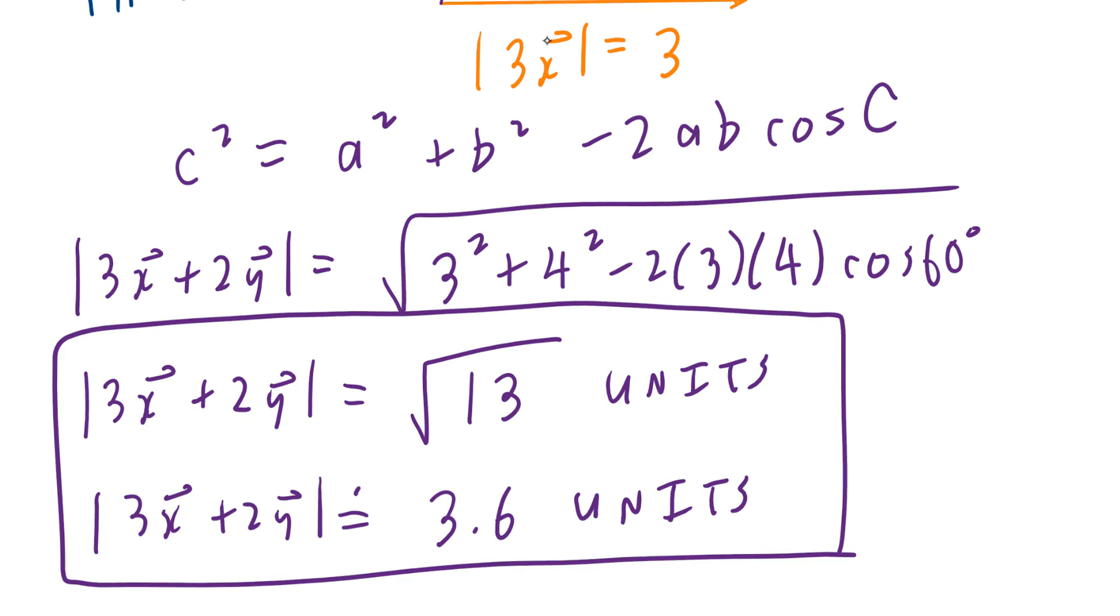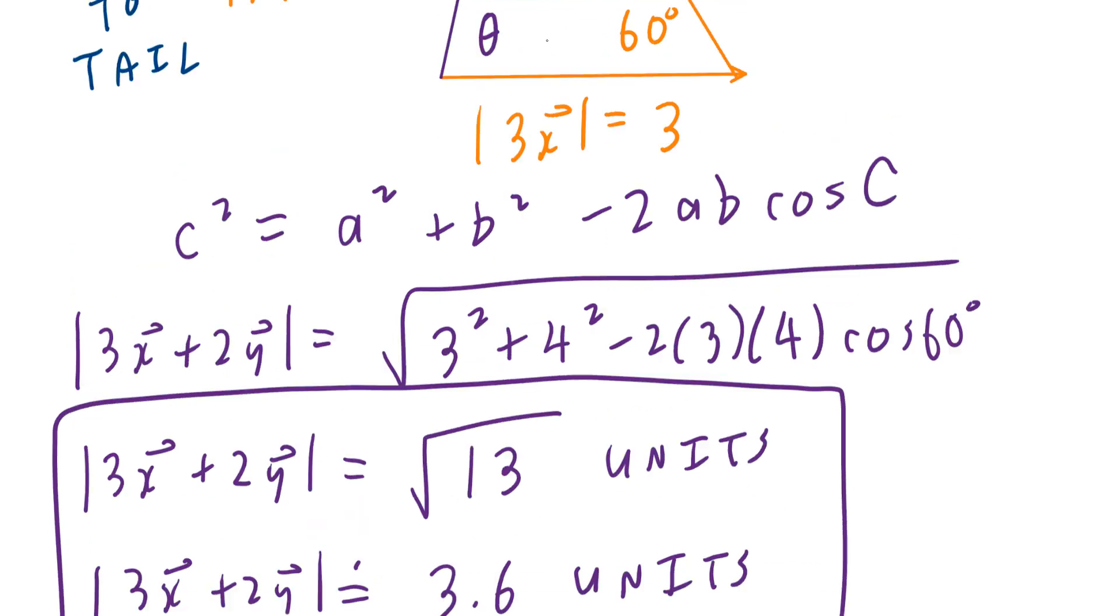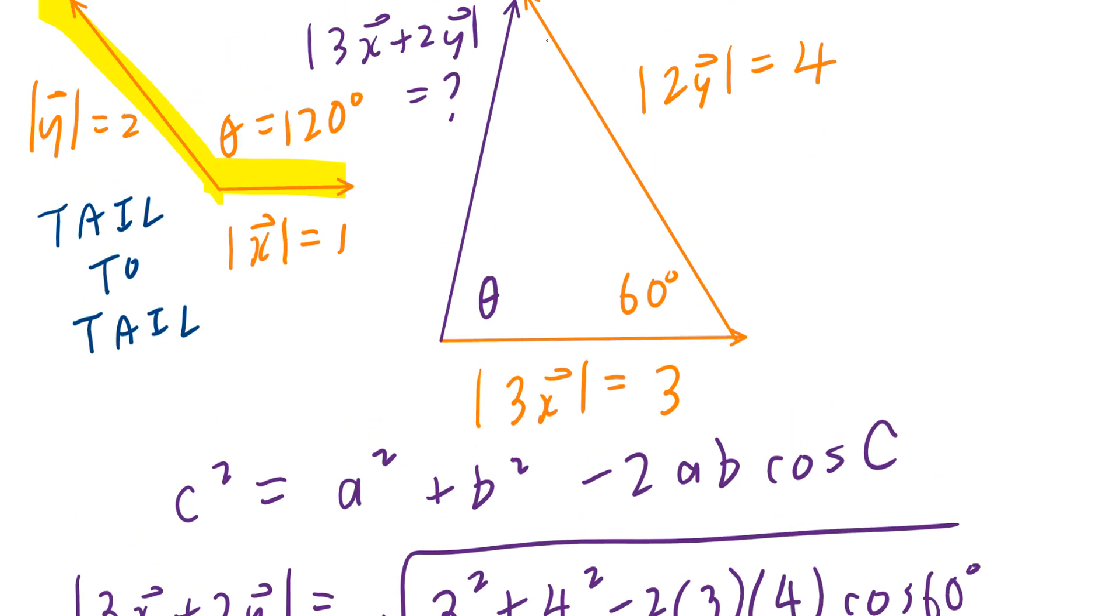To find the second part, you can apply something you did back in grade 10 math, also known as the sine law. So, to find this angle, angle theta, we could write sine theta divided by 4 equals to sine of 60 divided by, now to maximize the accuracy, I'm going to use exactly square root of 13. I'm just going to update the diagram. This is going to be the square root of 13.